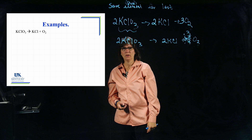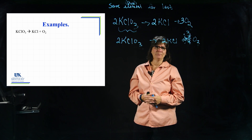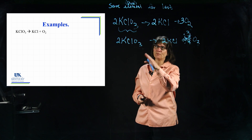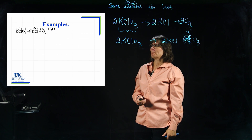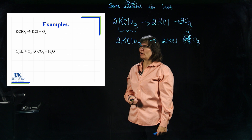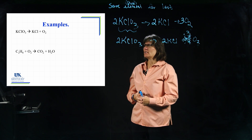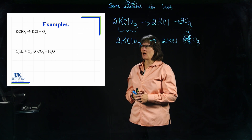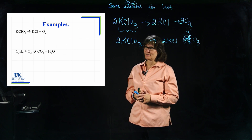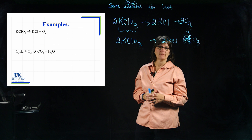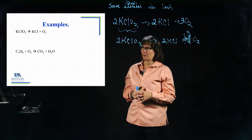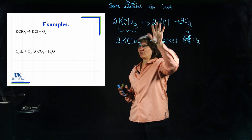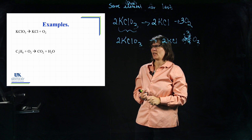Know this also: sometimes it's just trial and error — you try something, it doesn't work, and some of these are quite complicated. Here's the next example: C2H6 plus O2 goes to CO2 plus H2O. We see that oxygen appears in more than one place on the right-hand side, so we don't want to do oxygen first. Oxygen is also a pure element, so either way you look at it, it's helpful to save it for last.